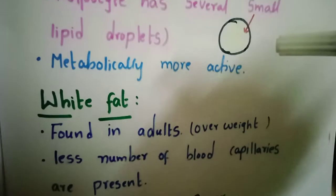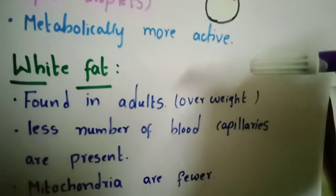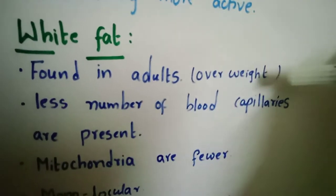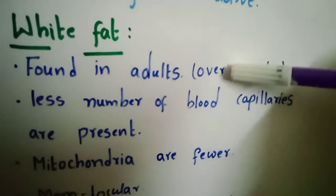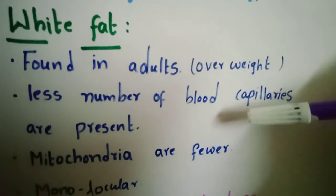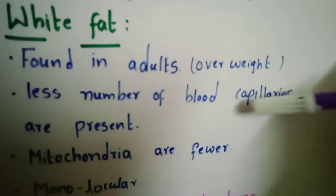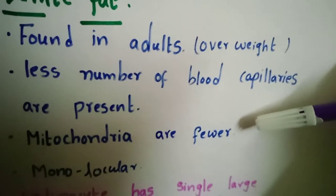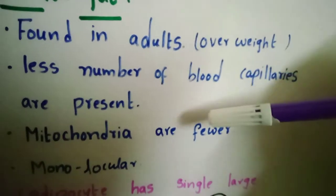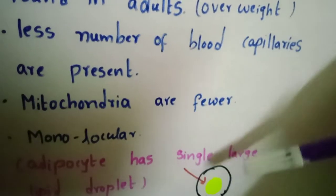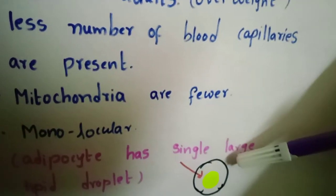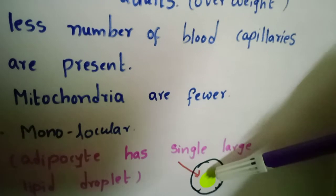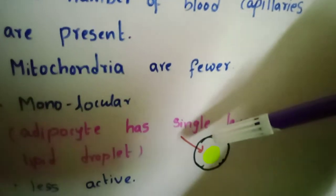White fat is found in adults, mostly in overweight people. A less number of blood capillaries are present and mitochondria are fewer. It is monolocular — see here, the adipocyte has a single large lipid droplet.